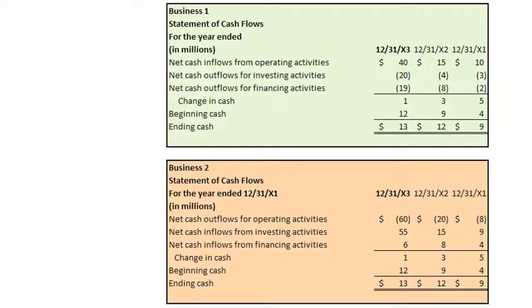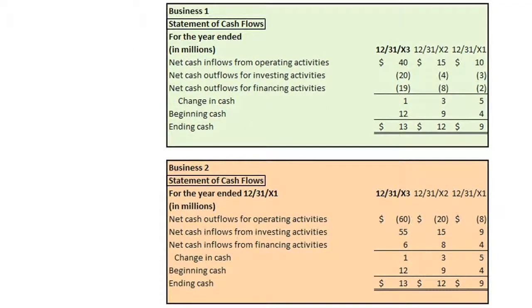Let's look at a summarized example of two statements of cash flows for two 10-year-old businesses, Business 1 and Business 2, operating in the same industry. As you can see, the numbers are presented here in millions of dollars.